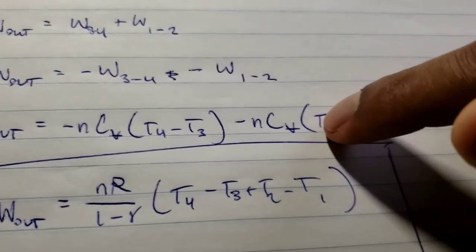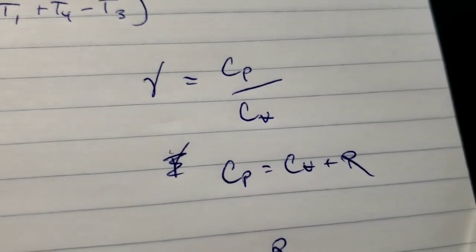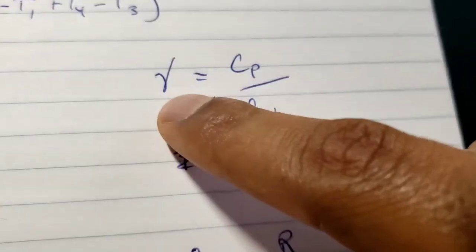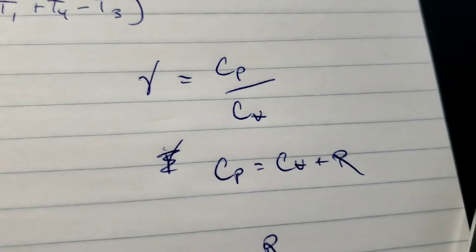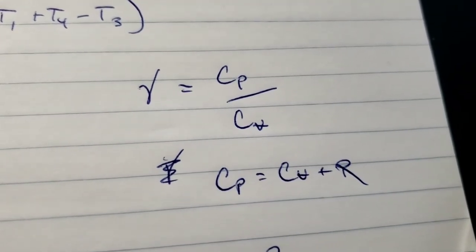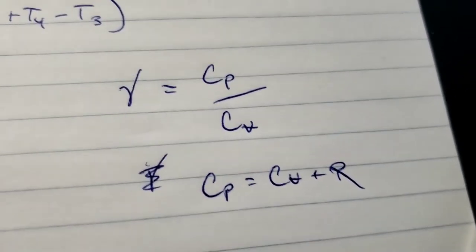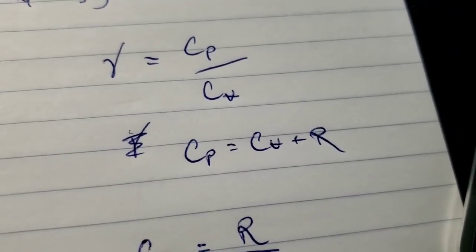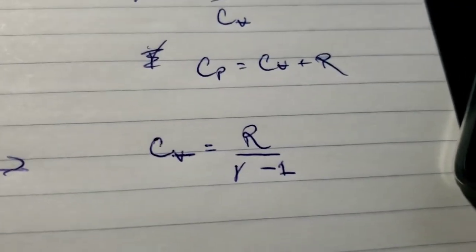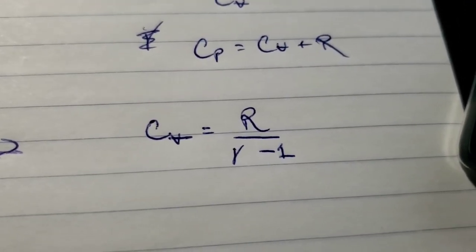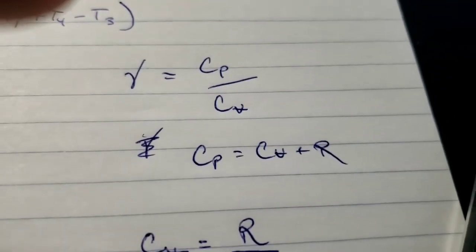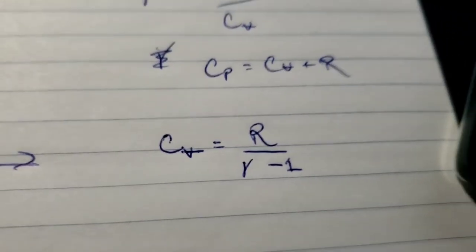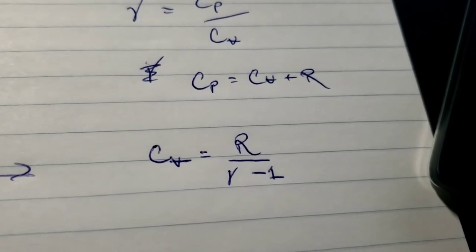To break down C_v in this, we're going back to some known values. This symbol gamma equals the specific heat for constant pressure over specific heat for constant volume. We also know that C_p equals C_v plus R, R being the gas constant. From there, we can rearrange and combine these two to get C_v equals R over gamma minus 1.